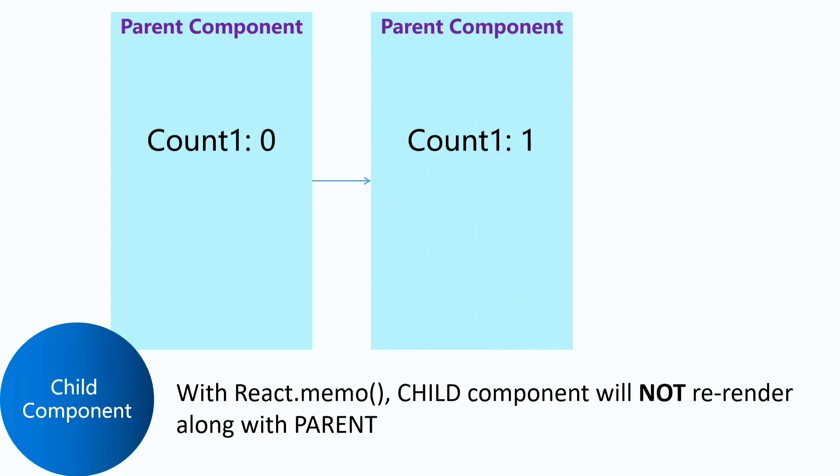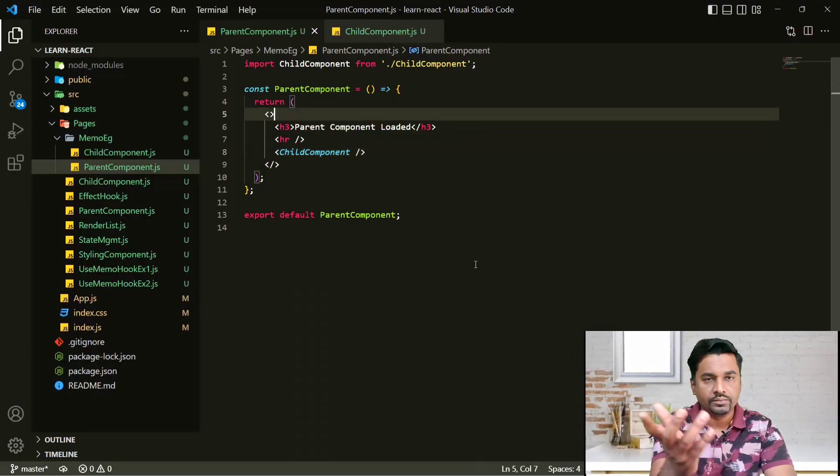Unnecessarily I am re-rendering my component in the DOM even though there are no changes made. Right now my child component is very small, but if my child component is huge, unnecessarily re-rendering it is bad. To avoid this we use react.memo — the memo function. In fact, material UI components also use react.memo. It's a good practice to use it when you don't want to unnecessarily load the child component.